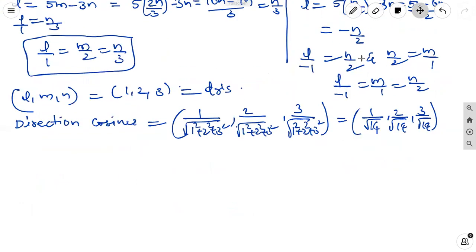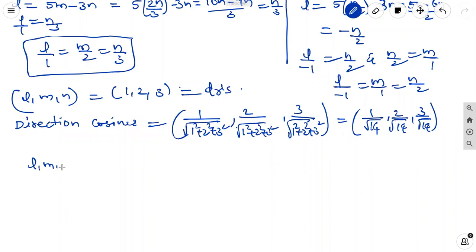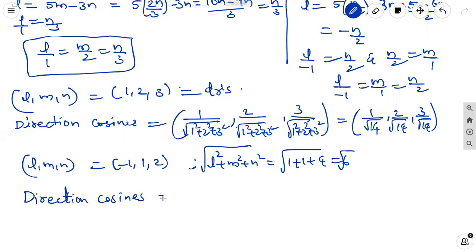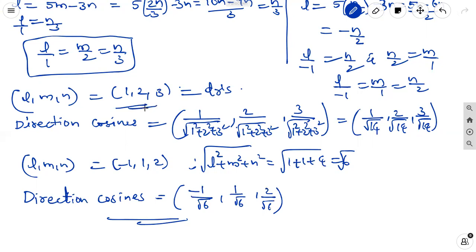For the second line, direction ratios are minus 1, 1, 2. l square plus m square plus n square equals 1 plus 1 plus 4 equal to 6, so root 6. The direction cosines are minus 1 by root 6, 1 by root 6, 2 by root 6. These are the direction cosines of the two lines connected by the given relations.